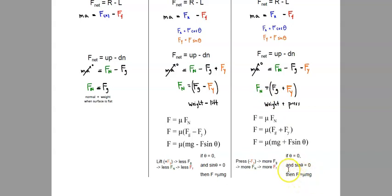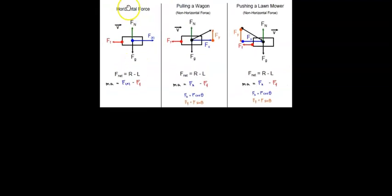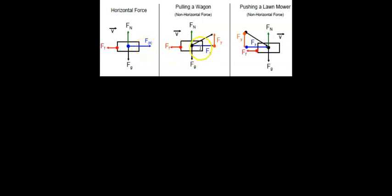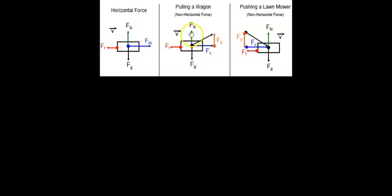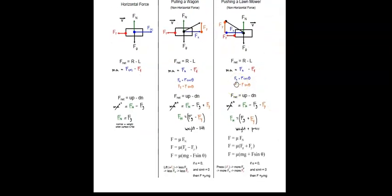In conclusion, the horizontal applied force case is no different in structure from forces applied at an angle — whether quadrant 1 or quadrant 4. You simply resolve the vector into horizontal and vertical components. A quadrant 1 vector has positive X and positive Y; a quadrant 4 vector has positive X and negative Y. Positive Y is a lift — reducing weight, normal force, and friction. Negative Y is a press — increasing all three. I hope you enjoyed this video; I'll see you in the next one.